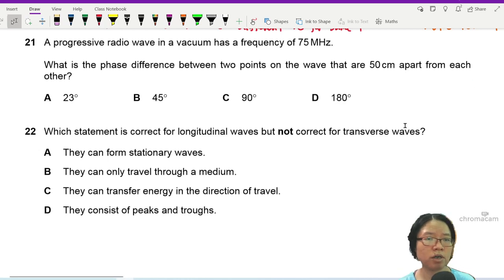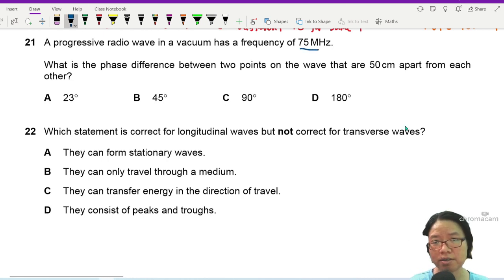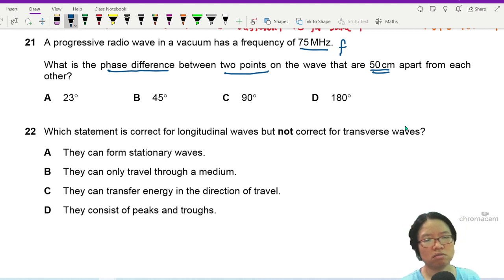Question 21: A progressive radio wave in a vacuum has a frequency of 75 megahertz, so this is F. What is the phase difference between two points on the wave that are 50 cm apart? So you're asked to find phase difference between two points on a wave.